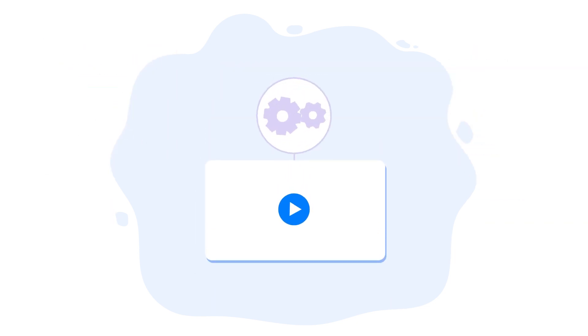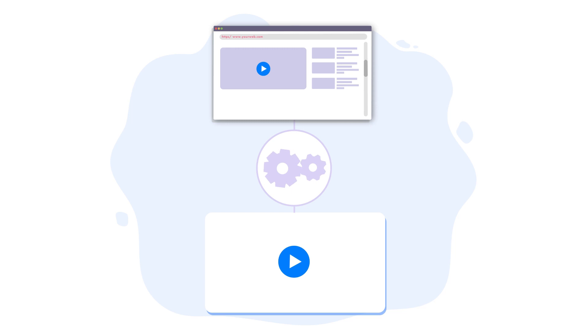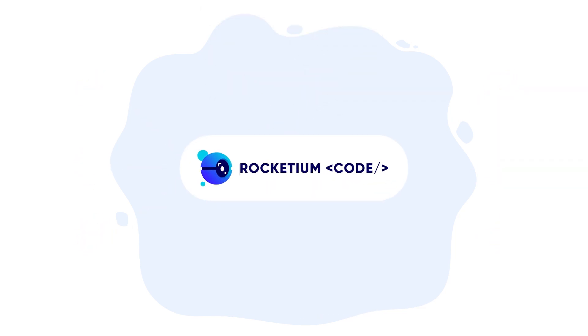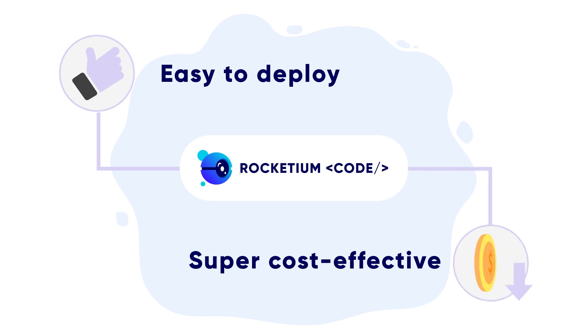You can use our smart integrations to publish these videos automatically onto your platform or your social channels. Rockateum Code is quick and easy to deploy, and is hundreds of times more cost-effective than manual video production.